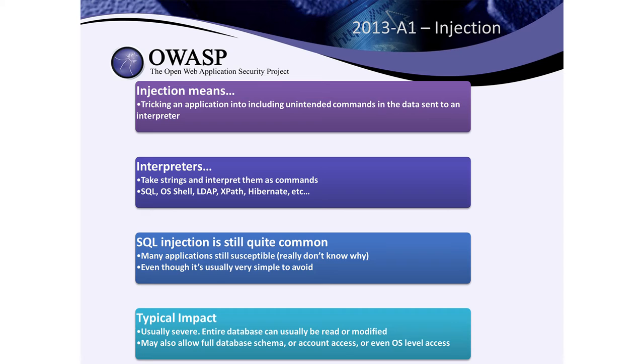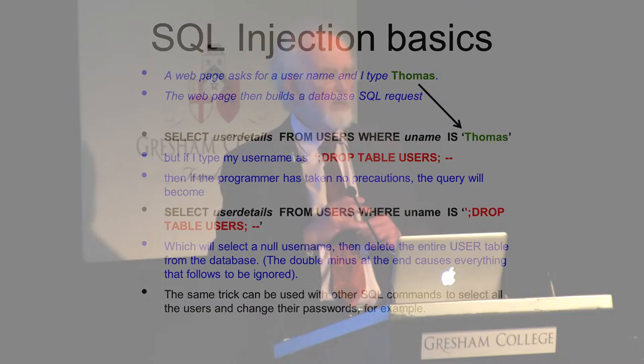But there are many, many other interpreters that run and which you can trick in the same sort of way, operating system shells for example, but lots and lots of different programs that actually have that sort of interface where they take text and they interpret it to mean something and then act upon it. An injection attack is tricking that interpreter into running something that you've supplied that is illegitimate, that is different from what the application developer intended to happen.